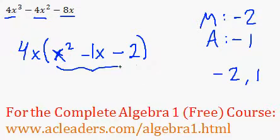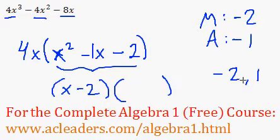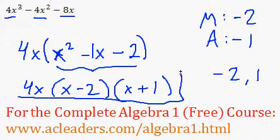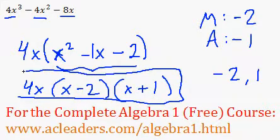So, we can actually factor this trinomial into x minus 2 times x plus 1. The 4x just comes down. This is the fully factored form of 4x cubed minus 4x squared minus 8x.